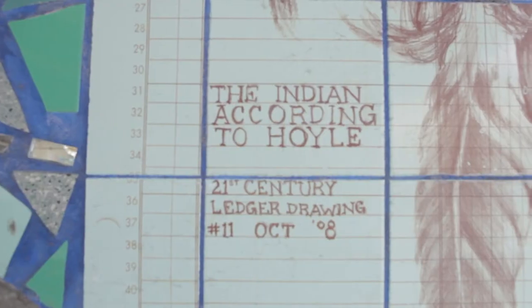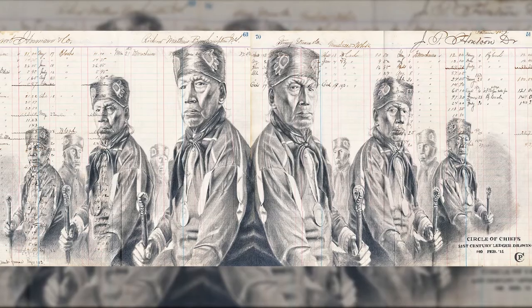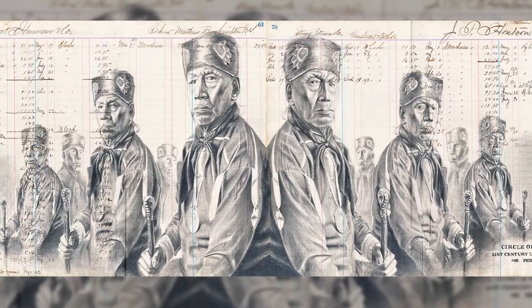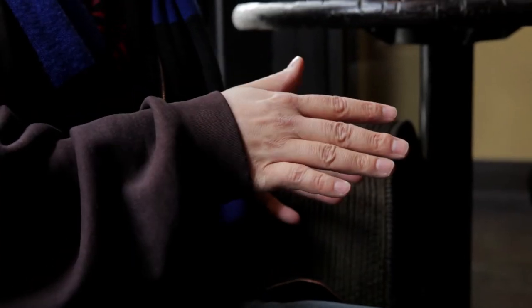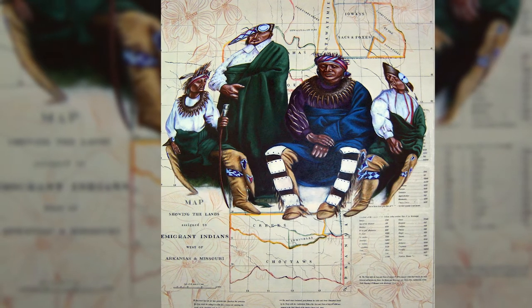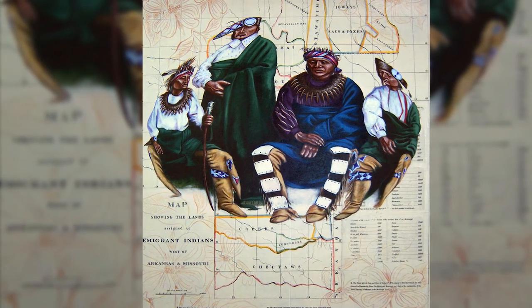Ledger drawings started in the mid-1800s when America was moving west. At the time when they were meeting with indigenous peoples, those peoples were creating their artwork on hides and skins. When the Americans introduced paper to them, they thought it was smaller, more compact, and easier to carry around, so they just started doing their artwork on that paper. It became a way of preserving their culture and their memories.